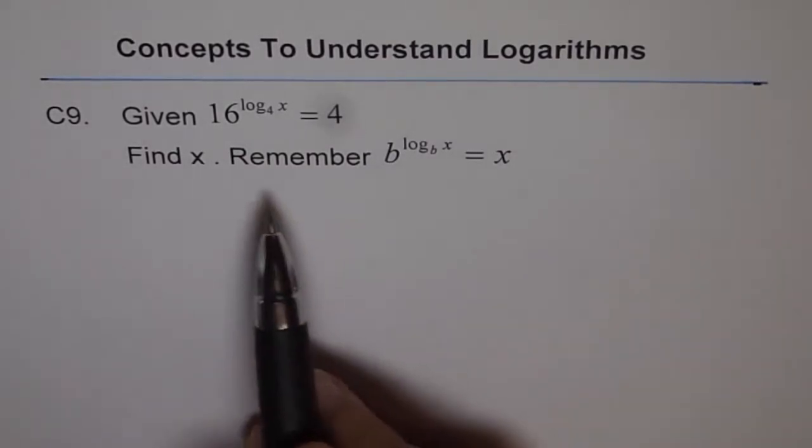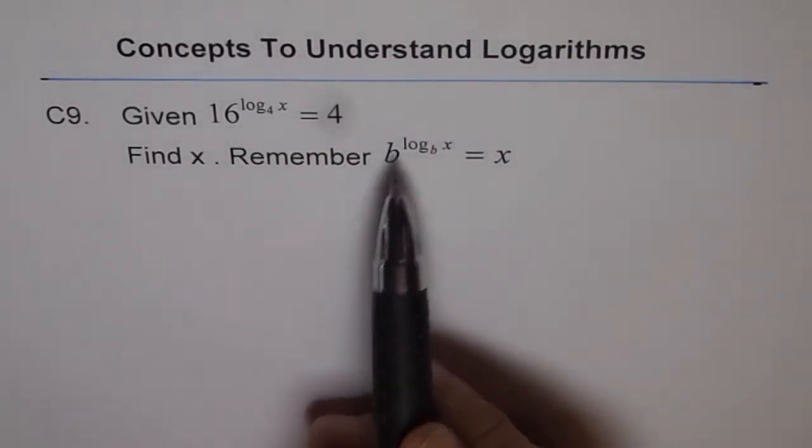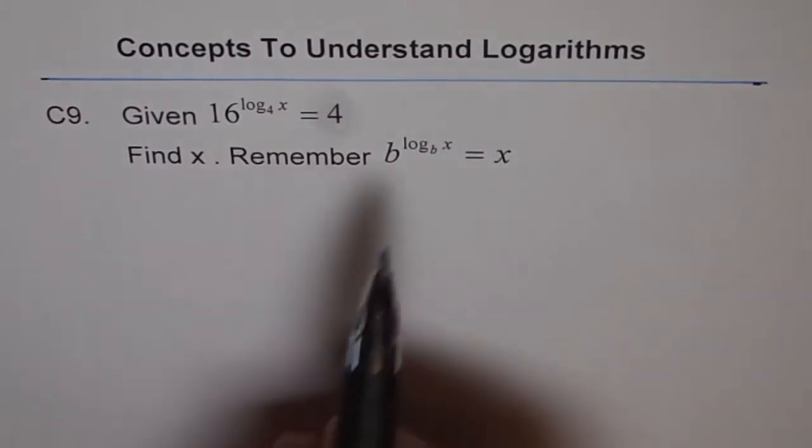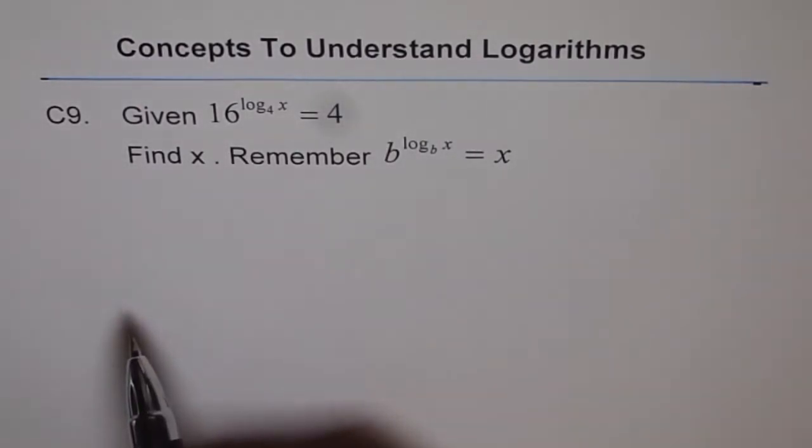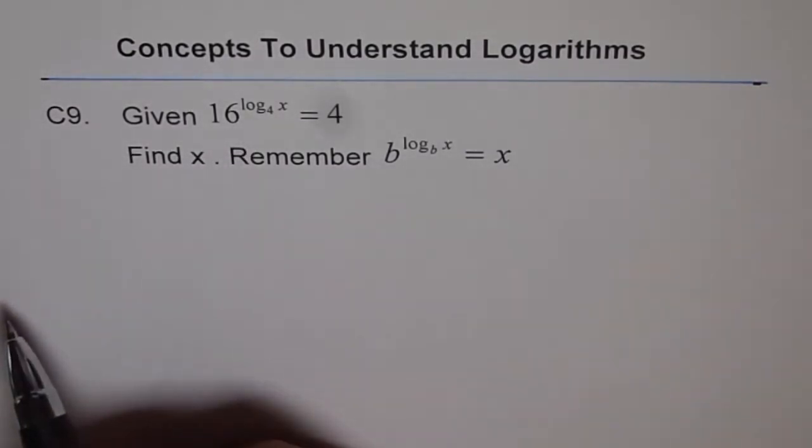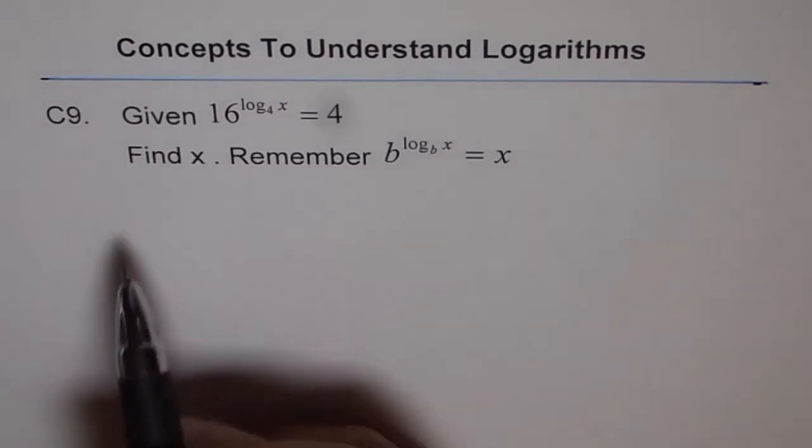Now in C8 we did this: you remember b to the power of log base b of x equals x, right? Now if you compare this to the given equation, you find that the base is not same. So the idea here is to somehow make the base same.